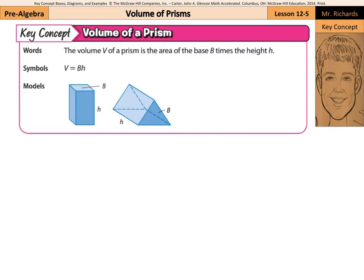Remember, a prism is a three-dimensional shape that has two congruent parallel bases. And so the volume of a prism is the area of that base times the height of the prism. V equals capital B for area of the base times lowercase h, the height. And you can see with our rectangular prisms we have the base times the height, and our triangular prism, the triangular base times the height of the prism.